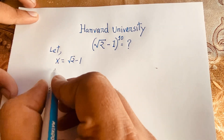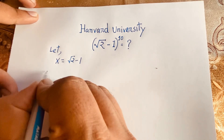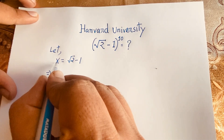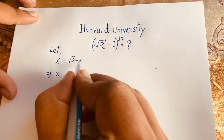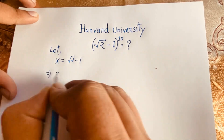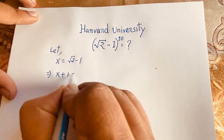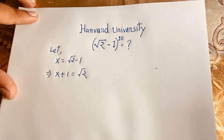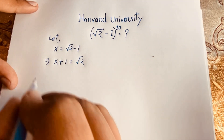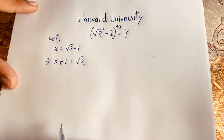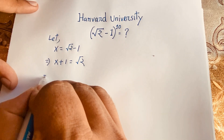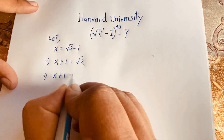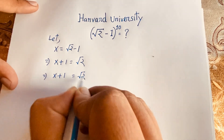Then this expression will be x. If I move the 1 to this side, it will be positive: 1 is equal to √2 minus x, which means x plus 1 is equal to √2. Now I use both sides whole square.